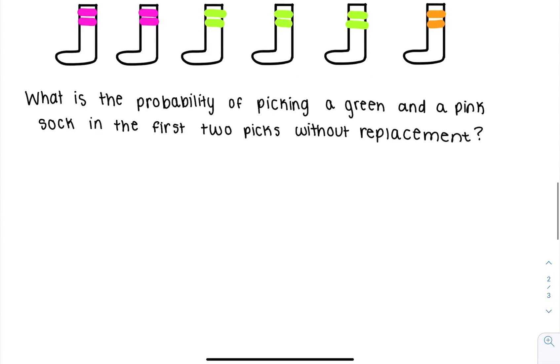And finally, we have a problem that says, what is the probability of picking a green and a pink sock in the first two picks without replacement? So without replacement means I'm not going to draw a sock and put it back into the drawer. I'm going to draw a sock and then put it on my foot, then draw another sock.